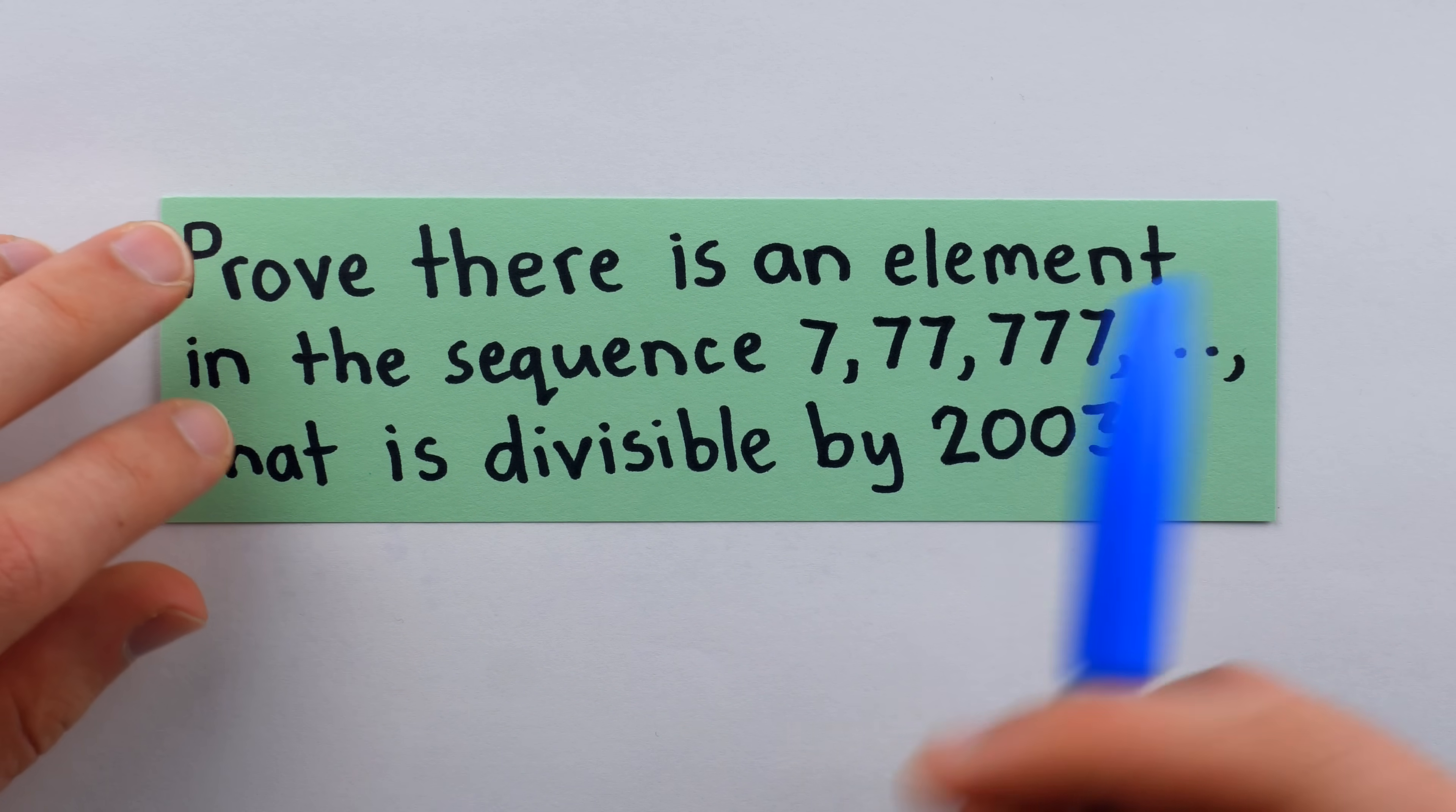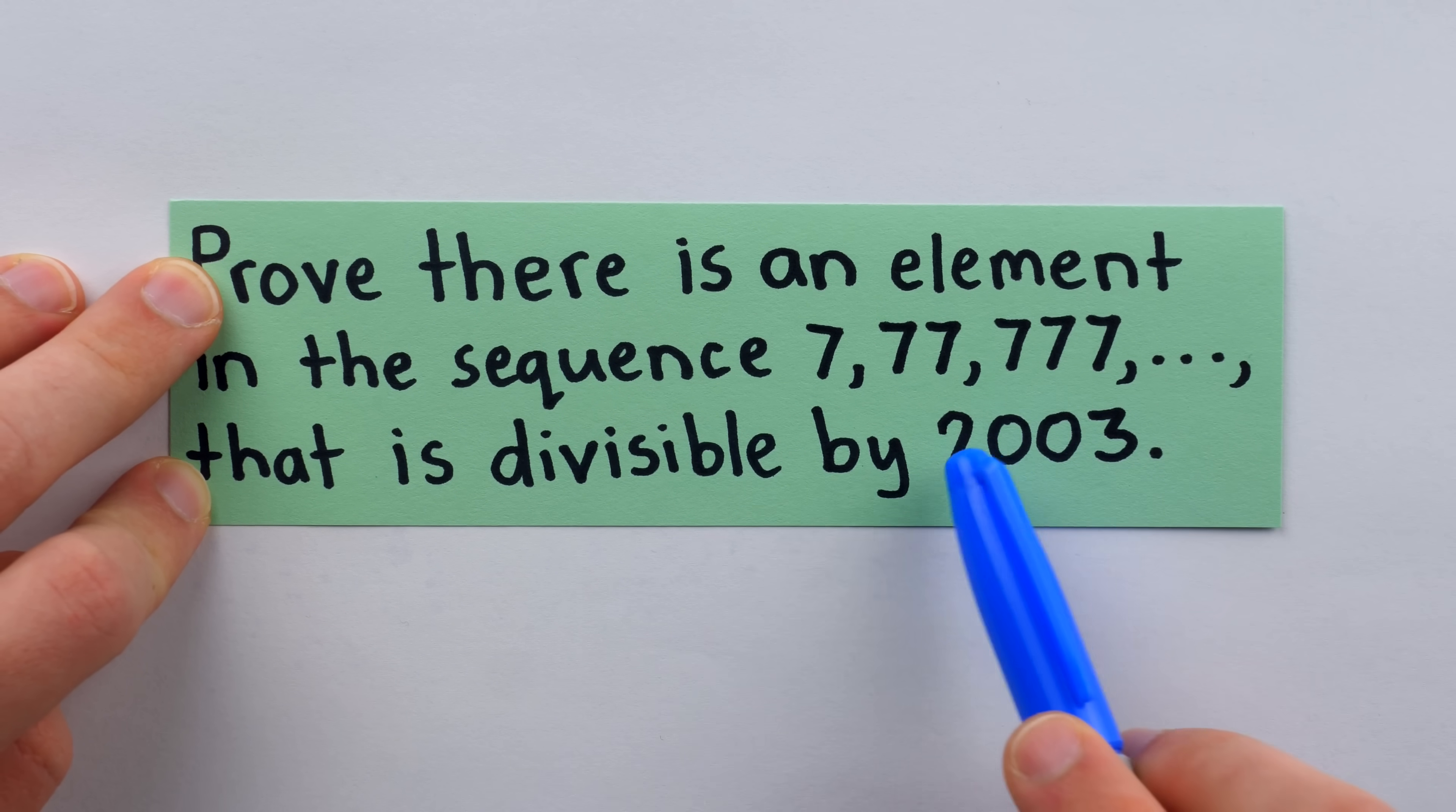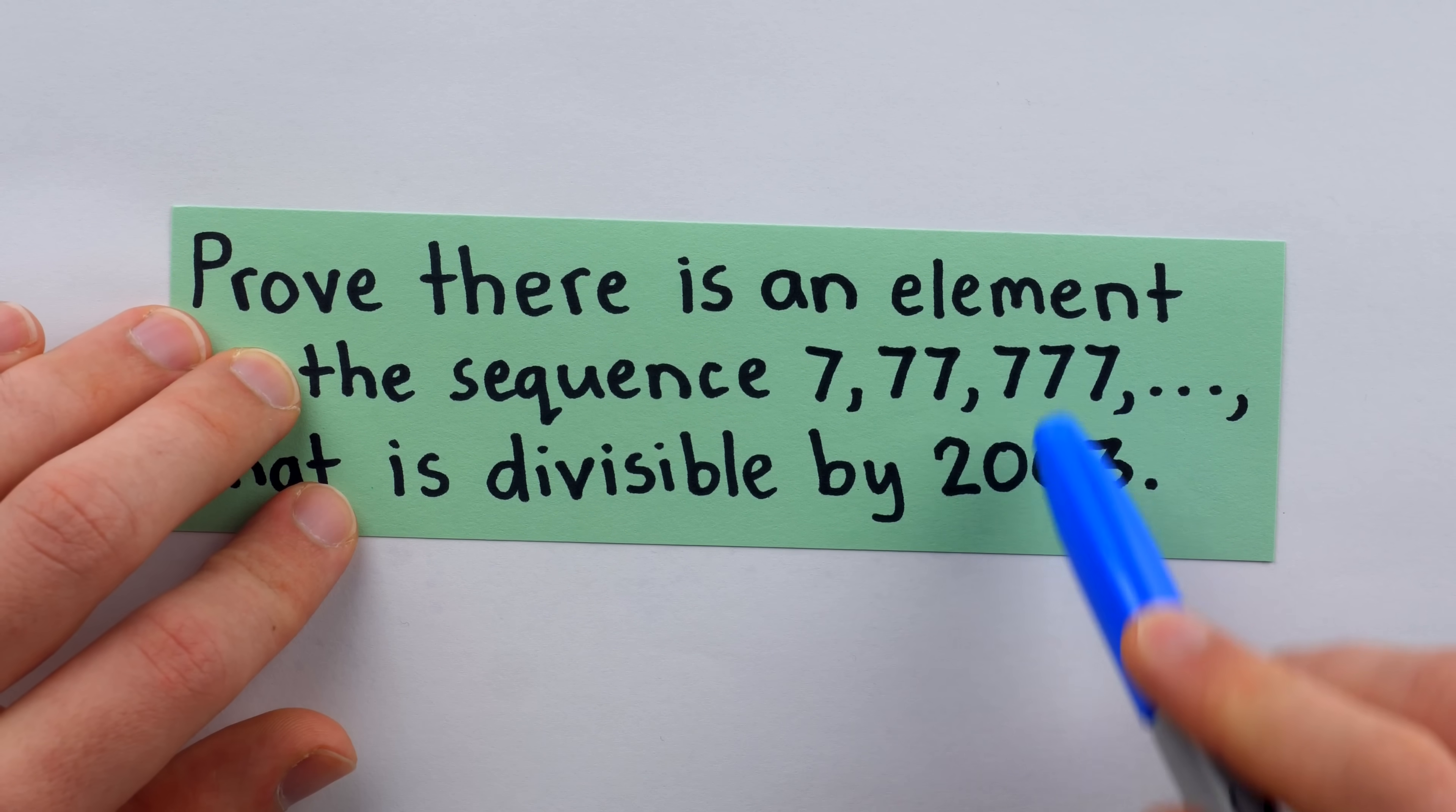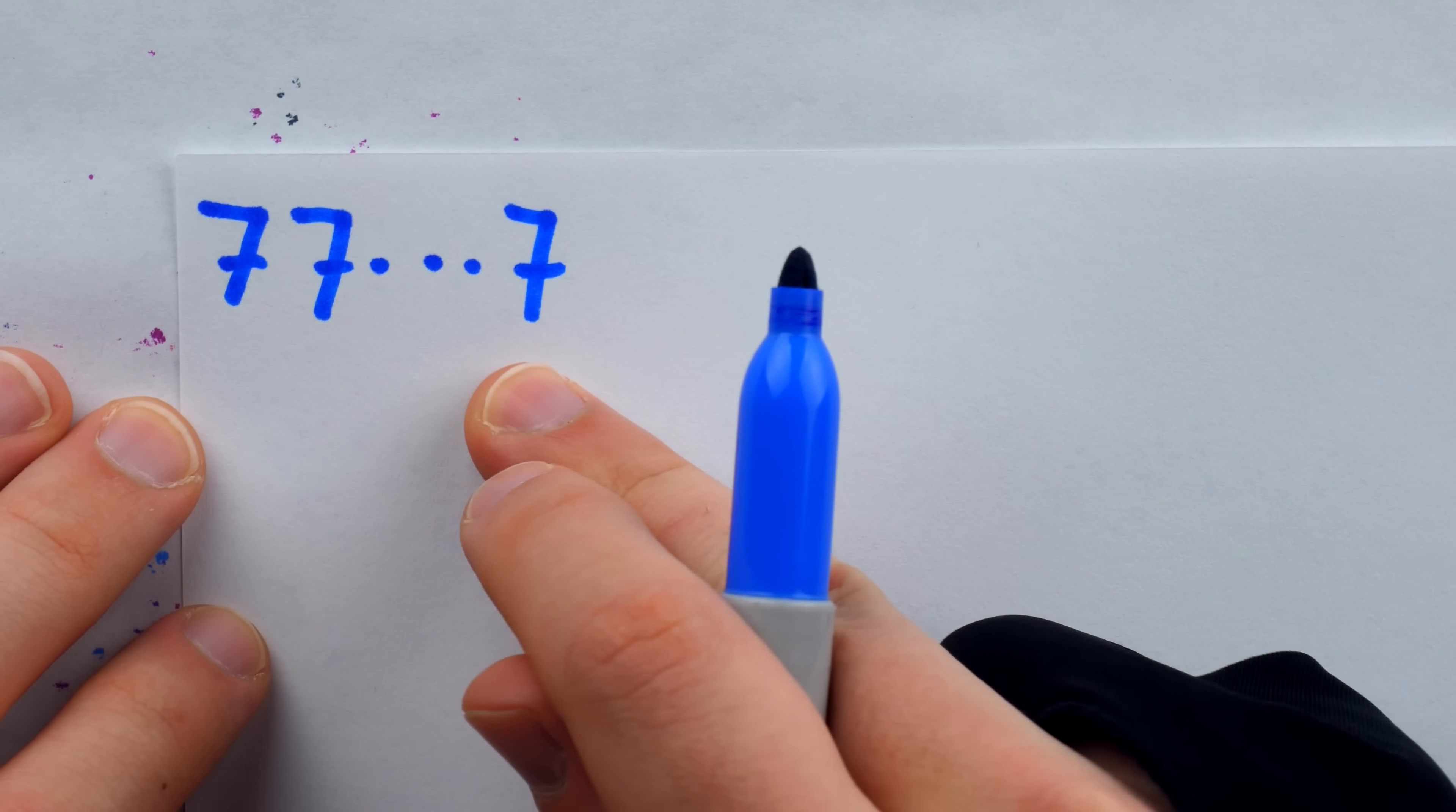Where should we begin to try to solve this problem? Well, since we're trying to show that some number in this sequence is divisible by 2003, let's start by considering what that looks like. What does it look like when a number from the sequence is divided by 2003? A generic term from the sequence, of course, looks like this.